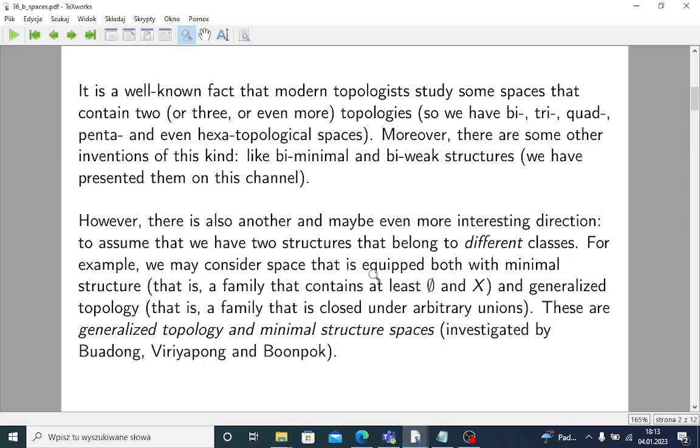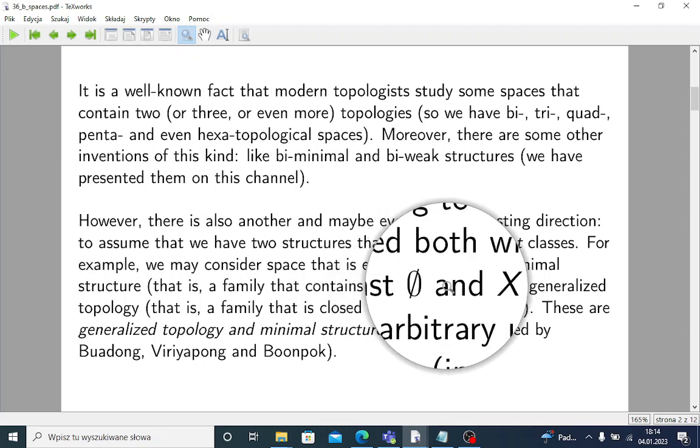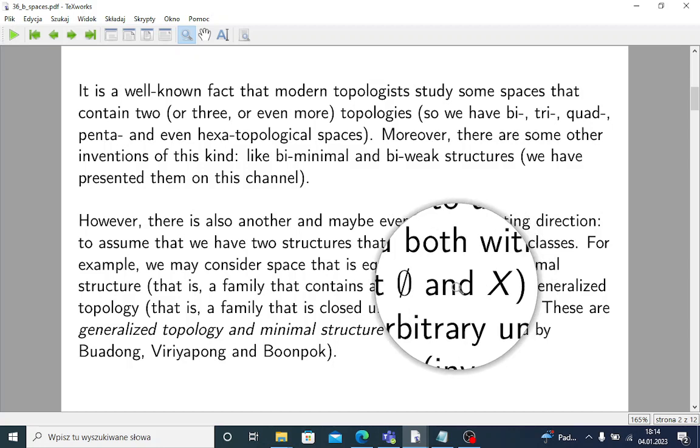However, there is also another and maybe even more interesting direction: to assume that we have two structures that belong to different classes. For example, we may consider a space that is equipped both with minimal structure. As we know, minimal structures are those families that contain at least empty set and the whole universe.